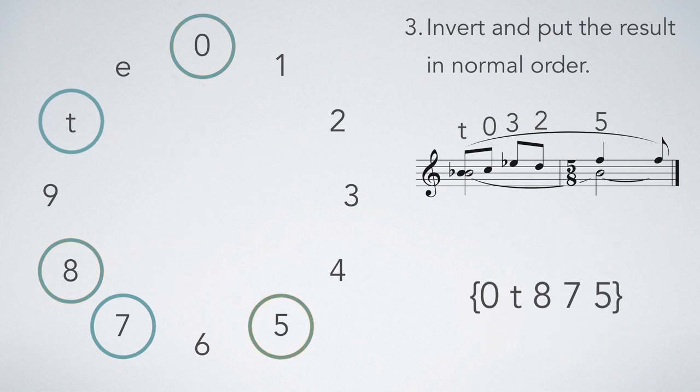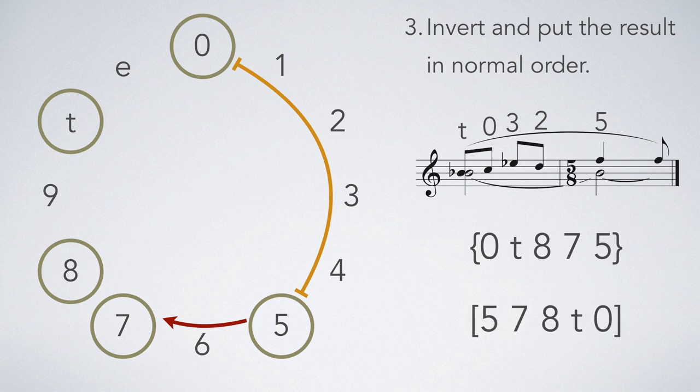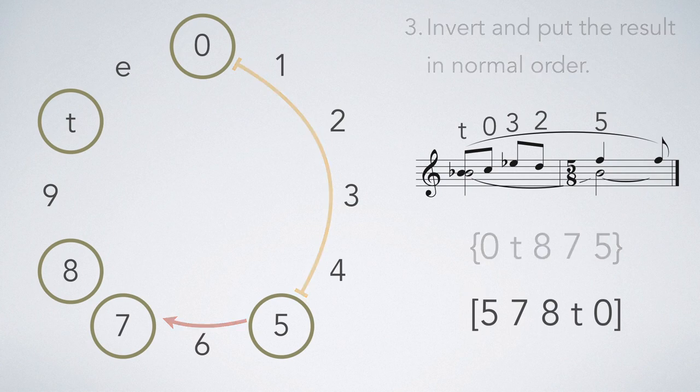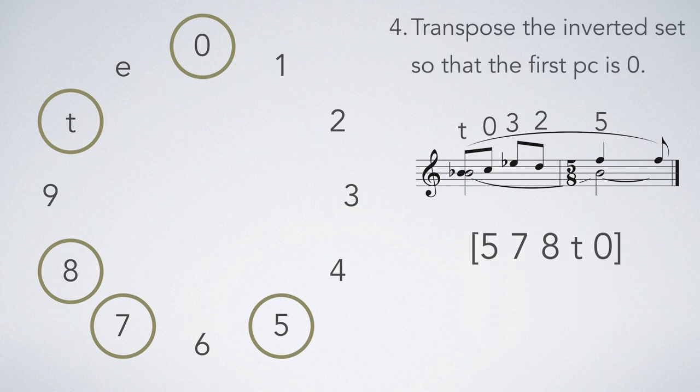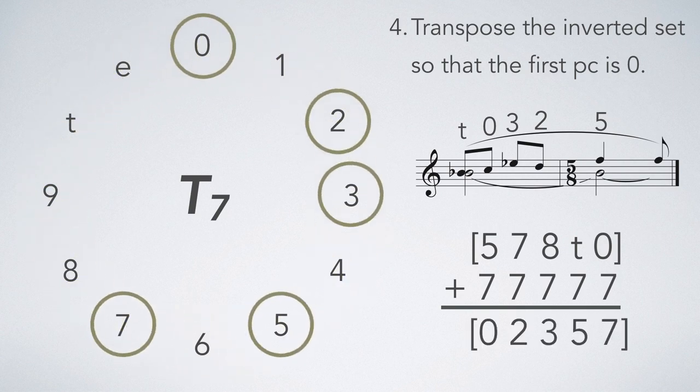In order to compare it to our other possible prime form, we need to put it in normal order and then transpose to zero. Avoiding the biggest gap, we start at pitch class 5 and go around clockwise, yielding a normal order of 5, 7, 8, 10, 0. To turn pitch class 5 into pitch class 0, we'll have to transpose by 7 semitones. Doing so results in 0, 2, 3, 5, 7.